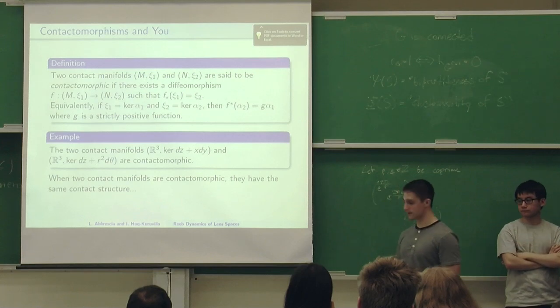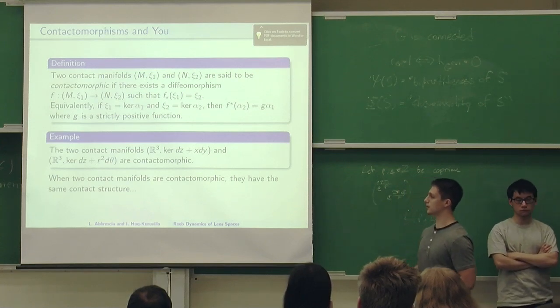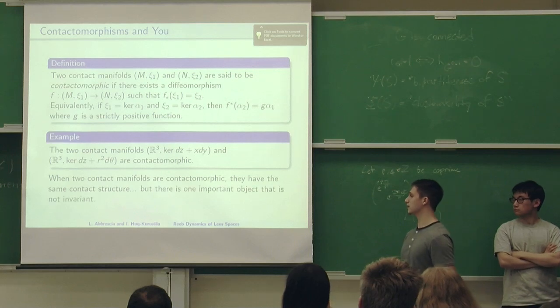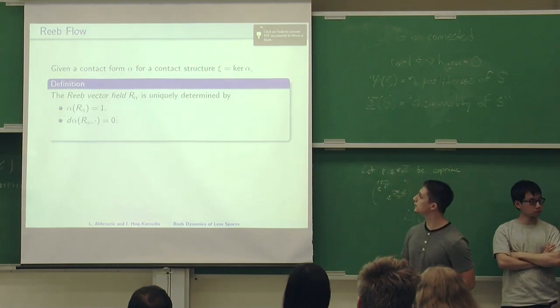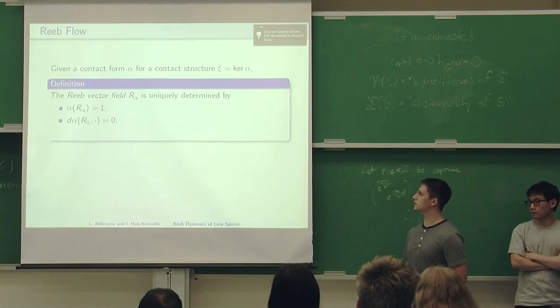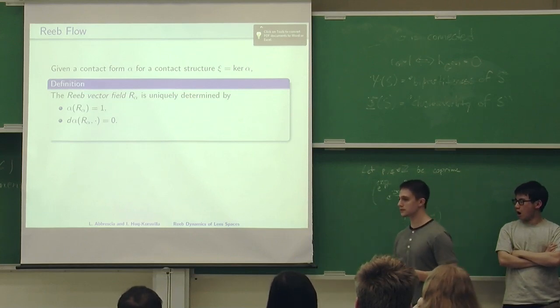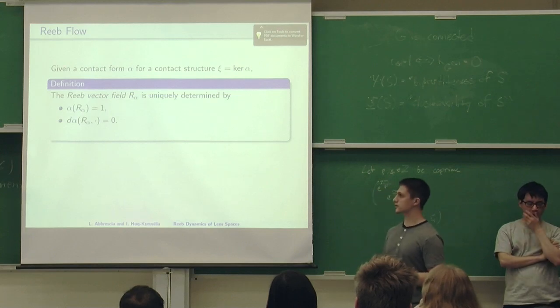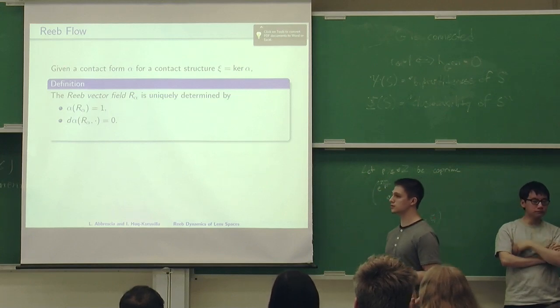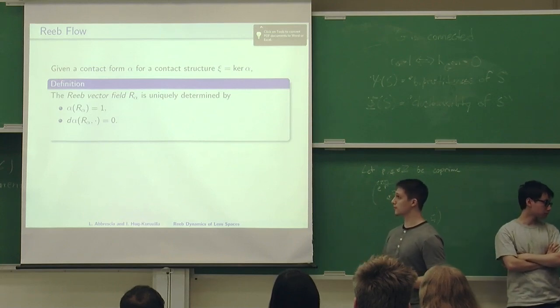However, there's something that's not invariant which is very important to our project, and these are called Reeb vector fields. Given a contact form alpha and a contact structure, the kernel of this alpha, then the Reeb vector field is the unique vector field determined by these two equations. The first equation is a normalization requirement, and the second one is a transversality requirement, which says that the Reeb vector field is transverse to the contact structure.